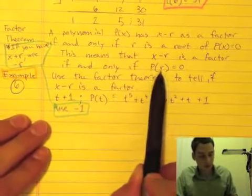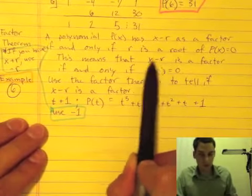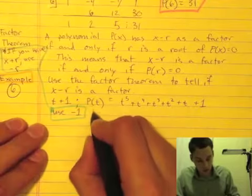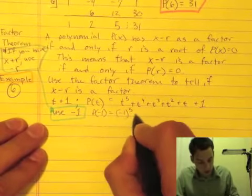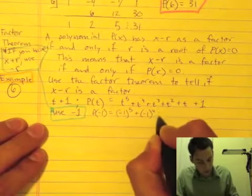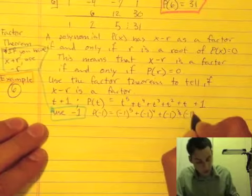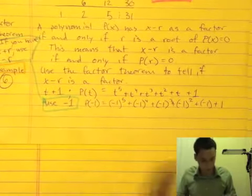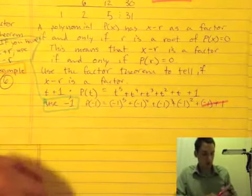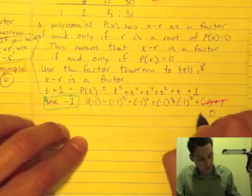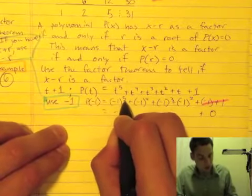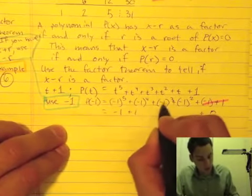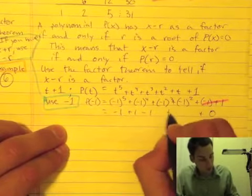And the theorem says if I plug it in and I get out 0, then this is a factor. So I'm going to plug this in. If I get out 0, then this is a factor. So let's say that P of negative 1 equals negative 1 to the 5th plus negative 1 to the 4th plus negative 1 to the 3rd plus negative 1 to the 2nd plus negative 1 plus 1. So right away, that cancels out. So this is 0. And then I can do, it's an odd power, so this just becomes negative 1. It's an even power, so it gets rid of that negative, plus 1. Odd power, minus 1. Even power, plus 1, plus 0.